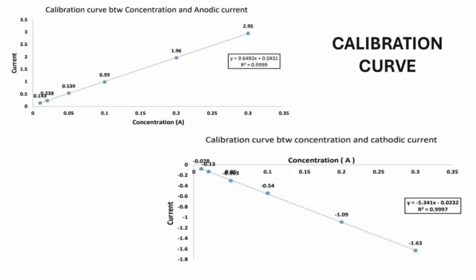There are two types of calibration curves here. First is the calibration between the anodic current and concentration. Second is the calibration between the cathodic current and the concentration. The calibration curves are shown in this picture.